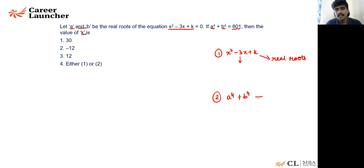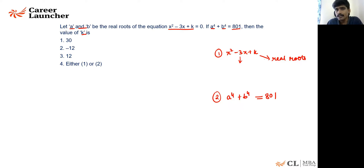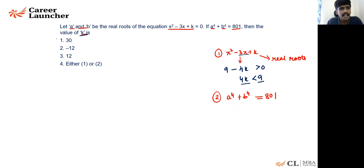The second piece of information is that a⁴ + b⁴ = 801. Now, for x² − 3x + k to have real roots, the discriminant must be ≥ 0, so 9 − 4k ≥ 0, meaning 4k must be less than 9. The question asks for the value of k. If 4k < 9, options one and two cannot be the answer. Option three must be the answer: k = −12.